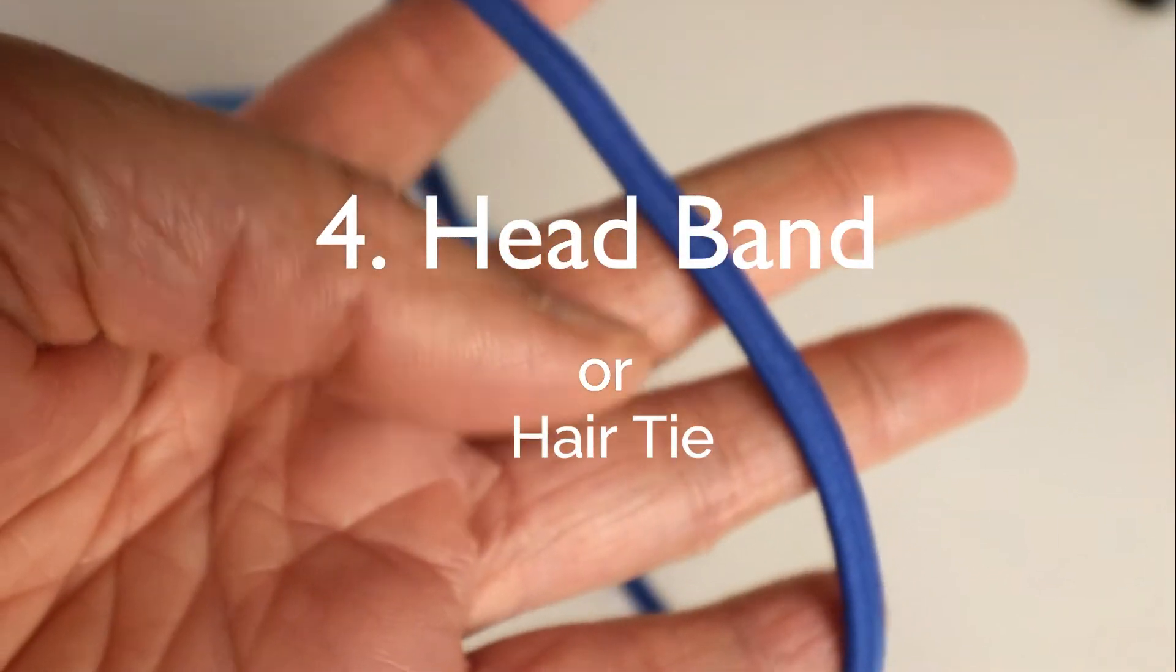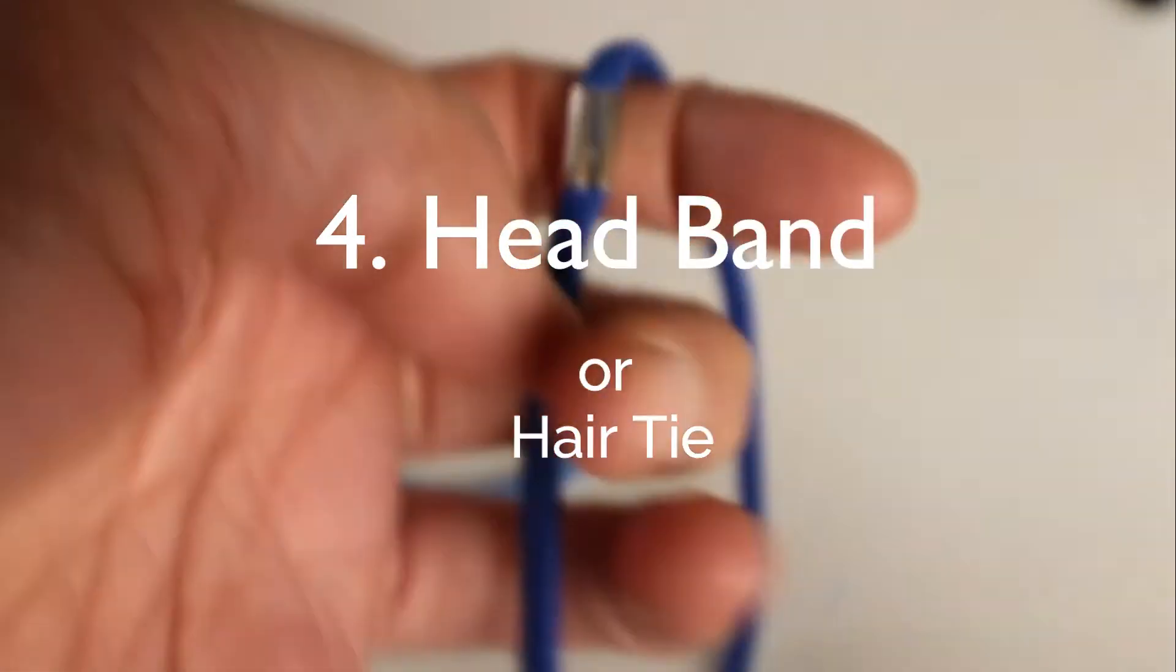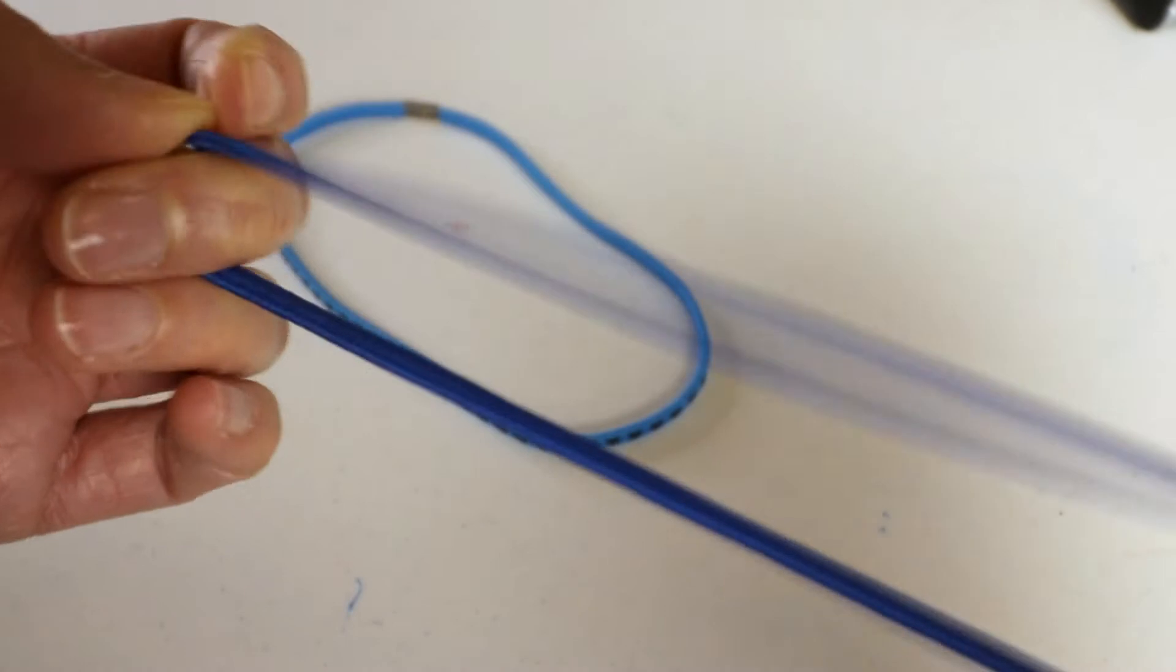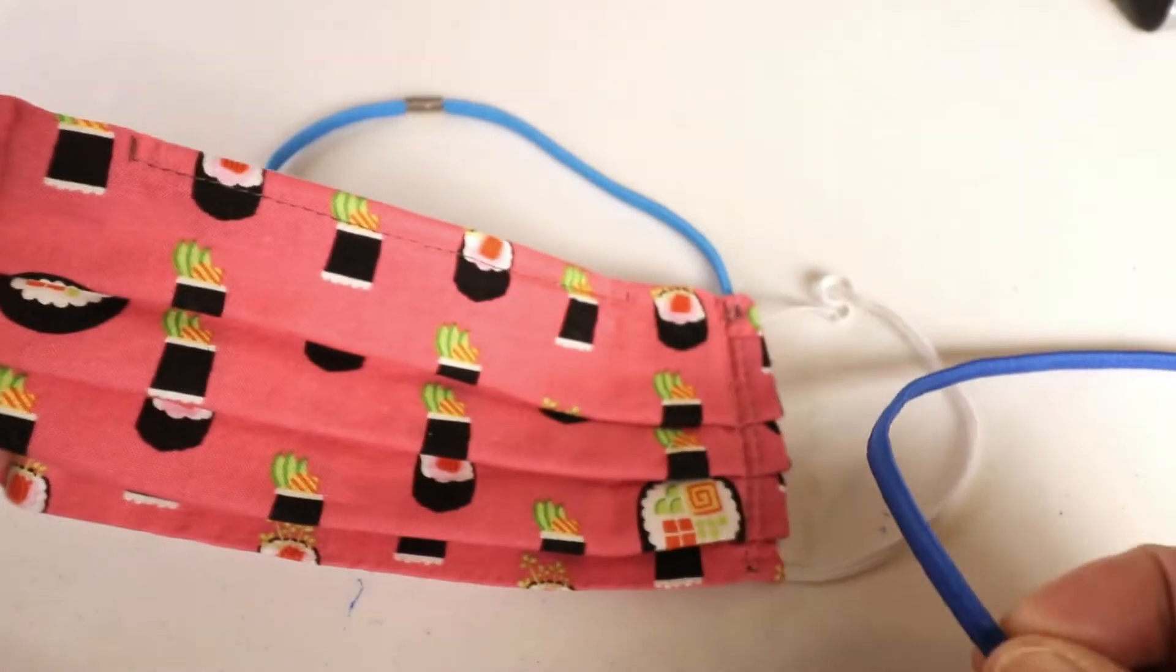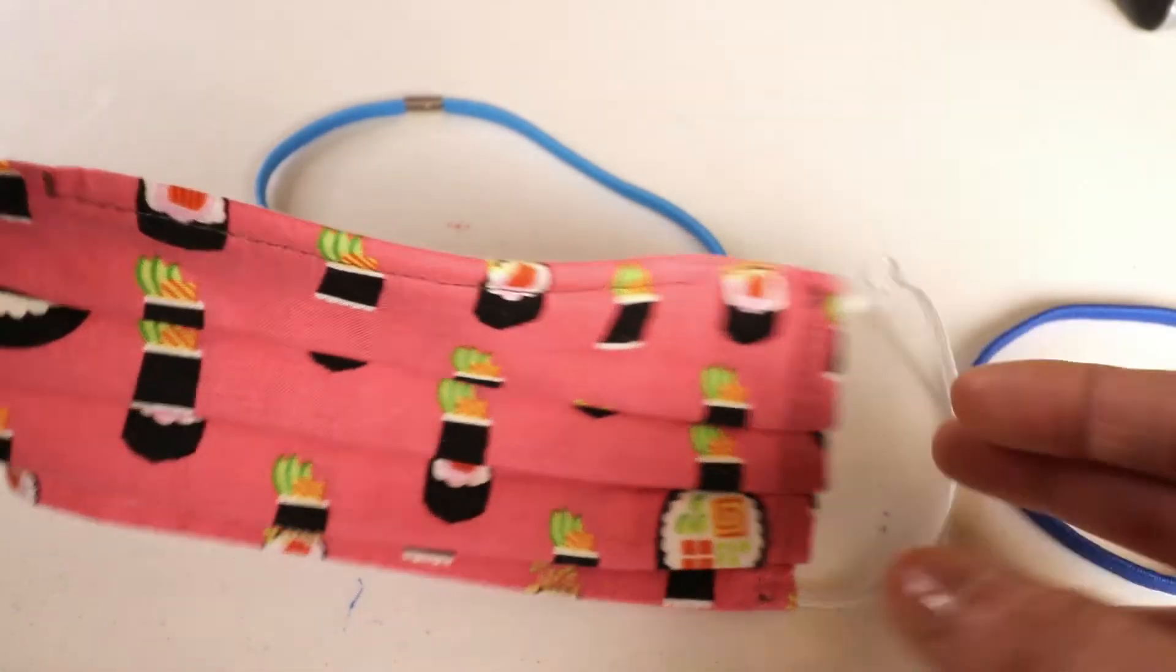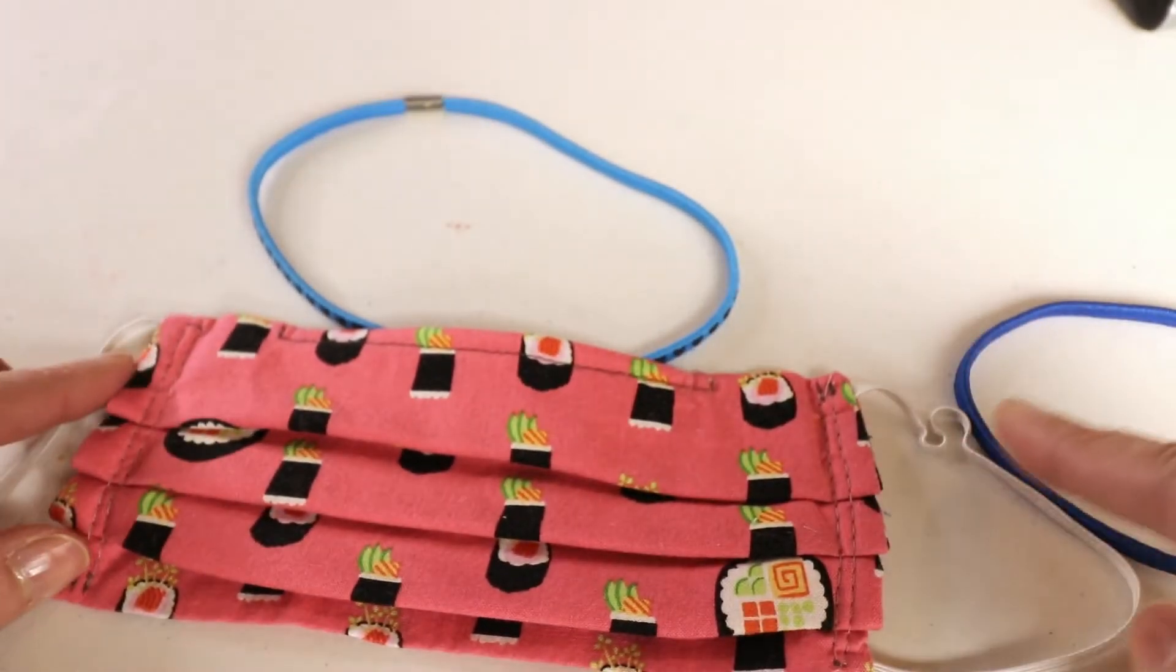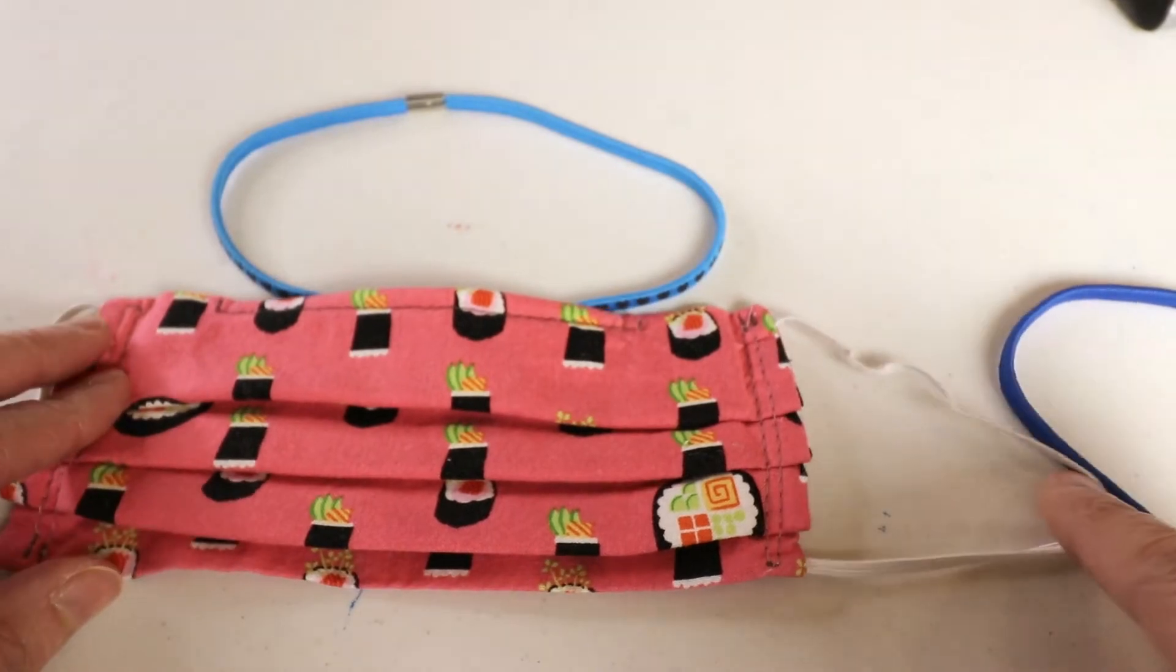Another alternative for the elastic is a hair tie. This is the longer one and you can just cut it up to the size you need. If the elastic is a little bit short you can always make the mask a little bit wider so it will still fit behind your ear comfortably.